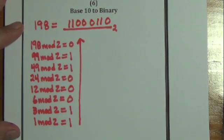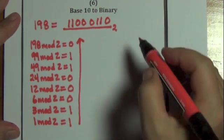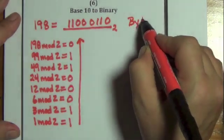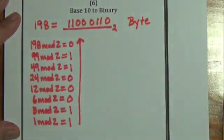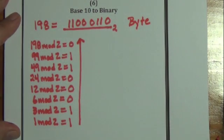So the number 198 written in base 2 is a byte. And in computer science a byte is a binary number with 8 digits.